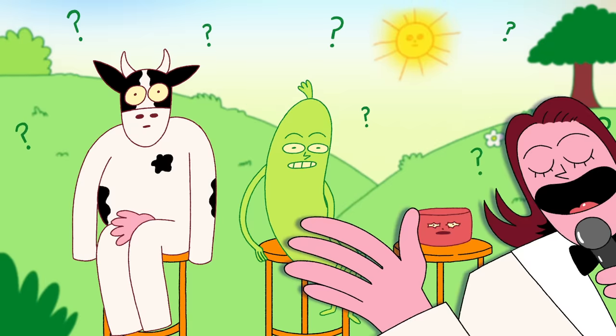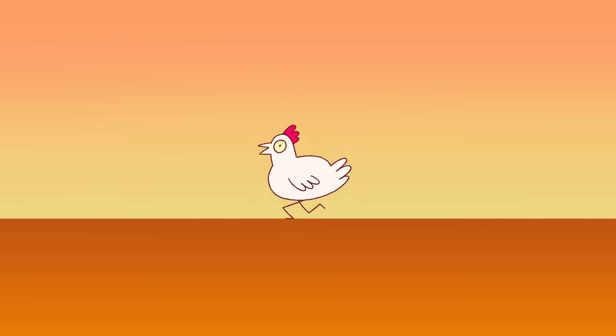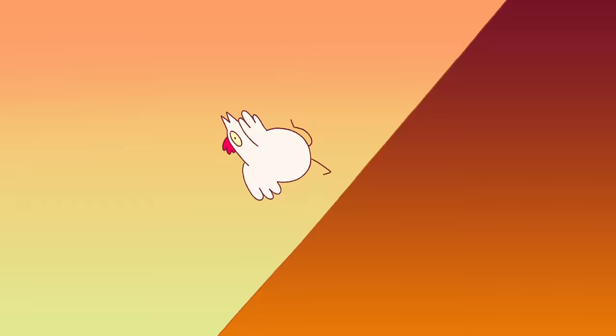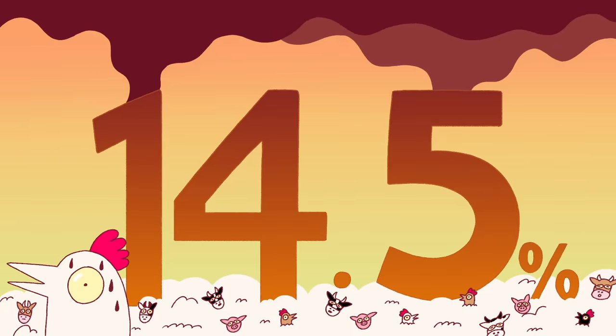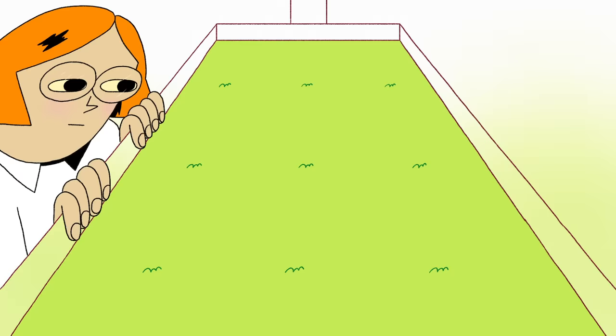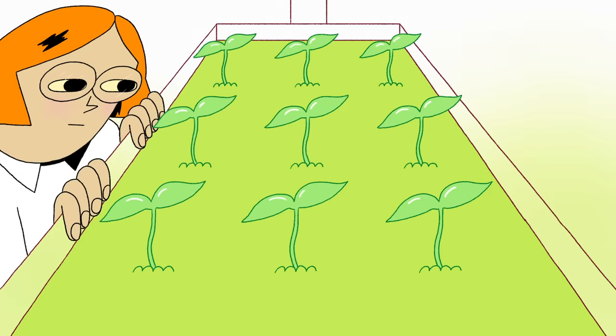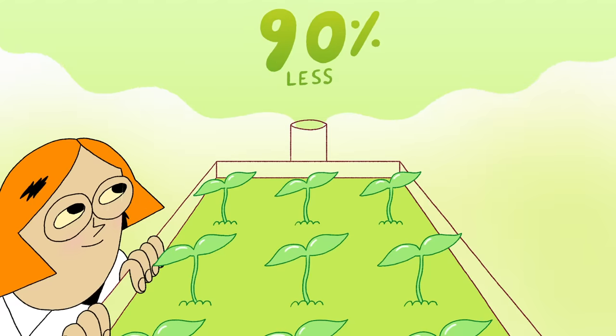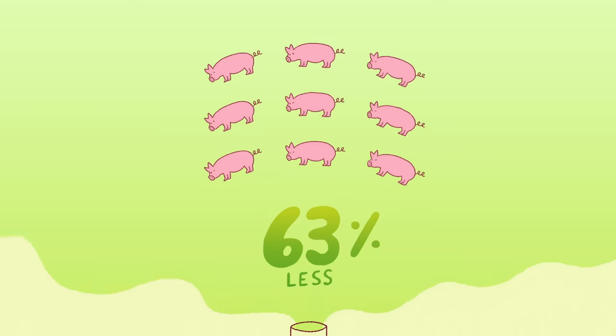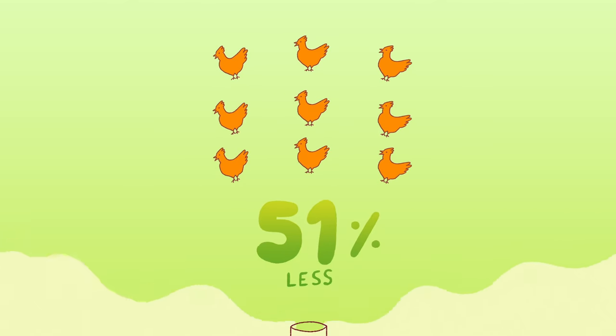So which contender is better for the environment? Animal agriculture generates an estimated 14.5% of human-caused greenhouse gas emissions. Researchers estimate that producing plant-based meat substitutes results in, on average, around 90% less greenhouse gas emissions than an equivalent amount of beef, 63% less than pork, and 51% less than poultry.